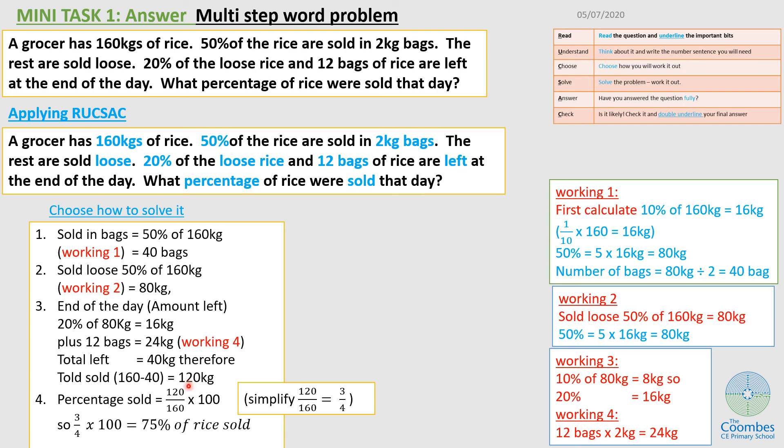So if I find a percentage of that, that would be 120 kg over 160 kg, then times 100%. Now for this, I know they are big numbers, so I can actually simplify that. 120 kg over 160. If I simplify, that's actually 3 quarters. So I'm looking for 3 quarters of 100%, which is 75%. So 75% of rice were sold.